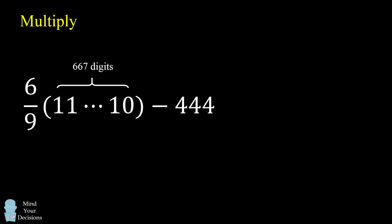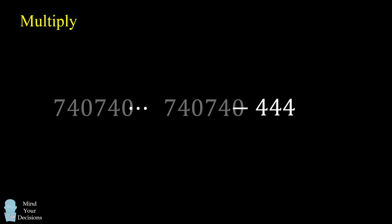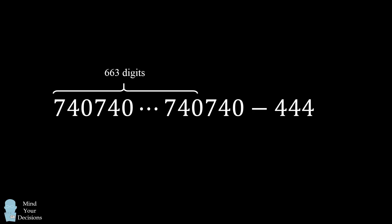Well, you can try and do a little bit of long division, and you'll quickly notice a pattern. You'll basically end up with 740 being repeated over and over again. So 663 of these digits will be 740. The last 3 will also be 740, but those last 3 will be affected by subtracting out by 444.